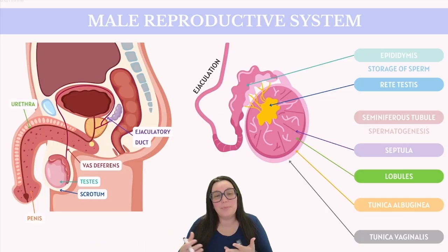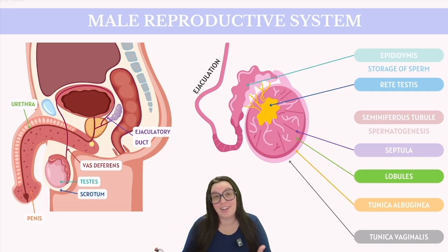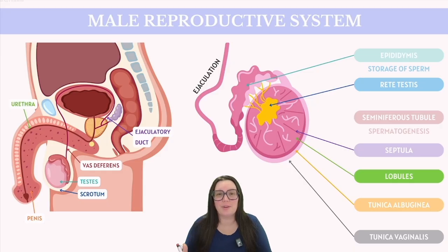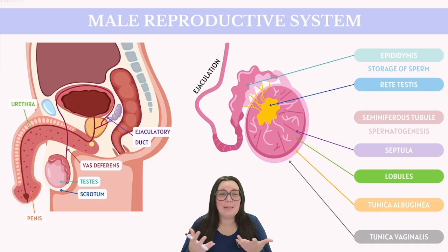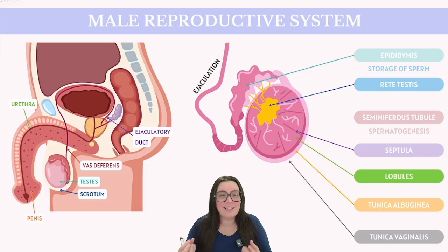As previously mentioned, the primary reproductive organ in males is the testes, which produce testosterone. The testes, epididymis, and the lower part of the spermatic cord are located within a skin pouch known as the scrotum. This pouch is separated into two compartments by a central divider called the septum. The testes is also the site of sperm production. Although it might seem risky to store these vital cells in an external sac, the slightly cooler temperatures outside the body provide the optimal conditions for sperm development.